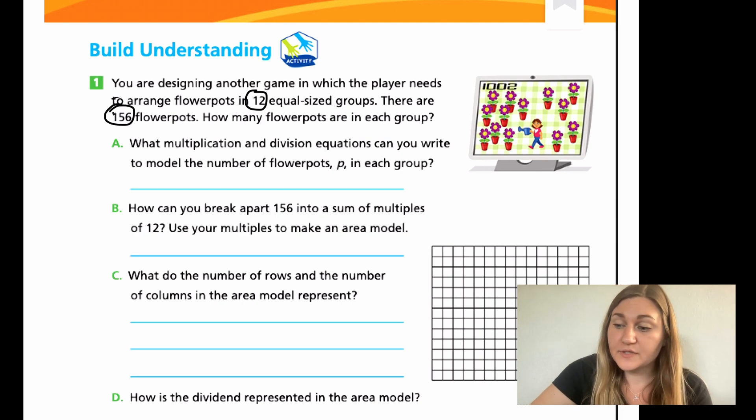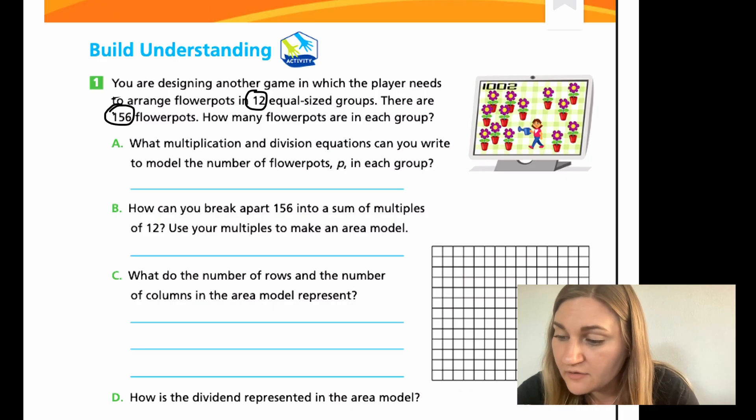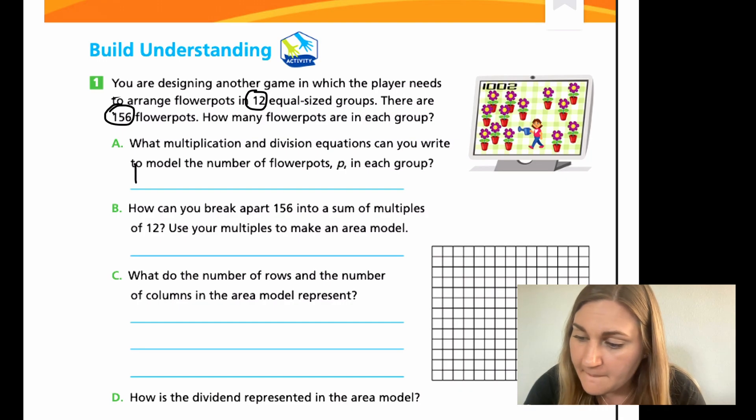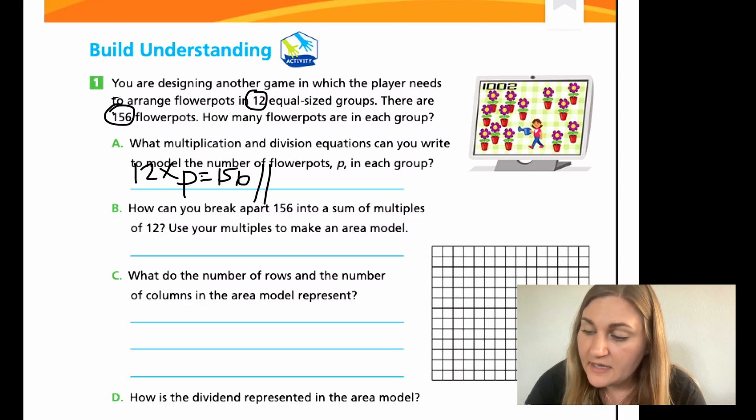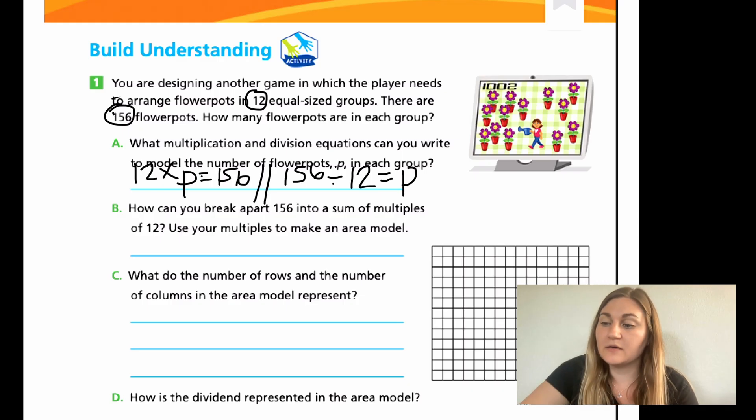All right. Hopefully, you got both of those equations. The multiplication is what we're going to start with. So, it's going to be 12 times P equals 156. And the division that we're going to get, we're starting with the 156. We're going to be dividing it by 12 to find our total amount of pots that represents P.